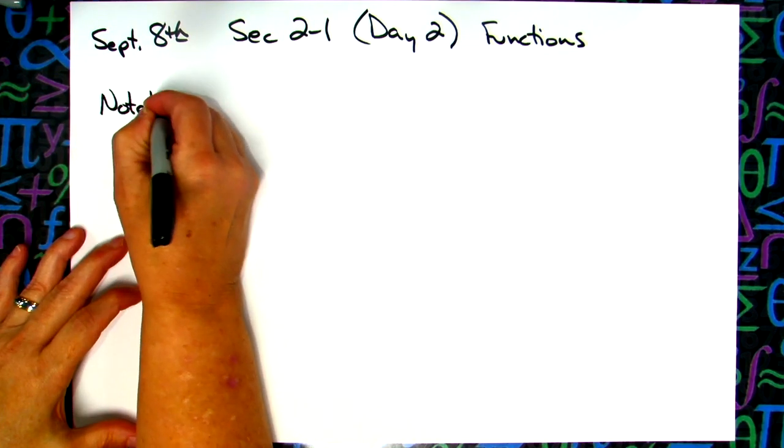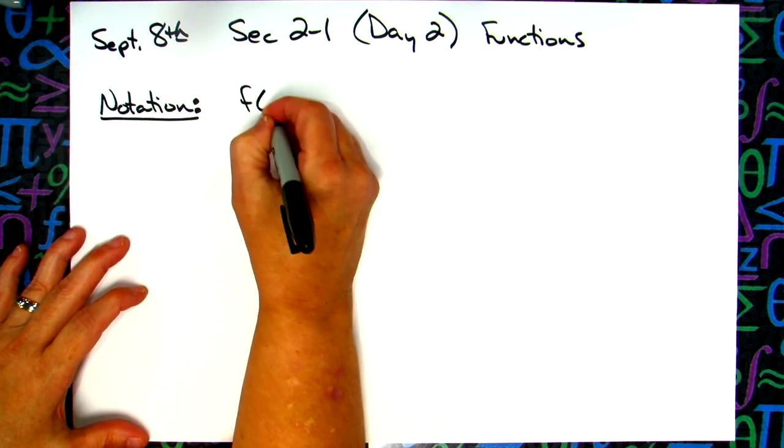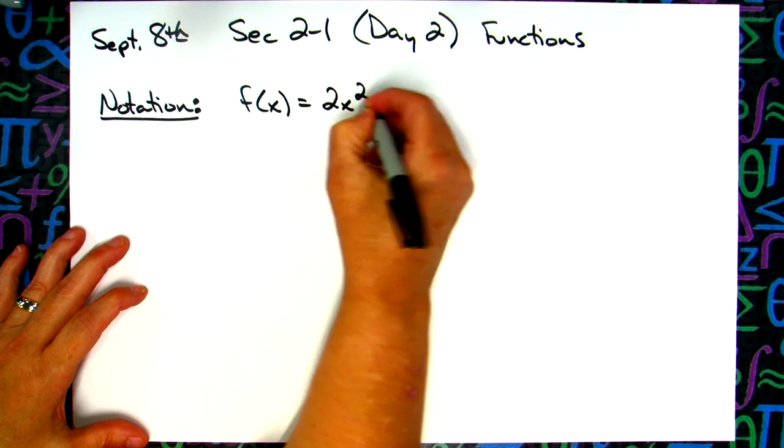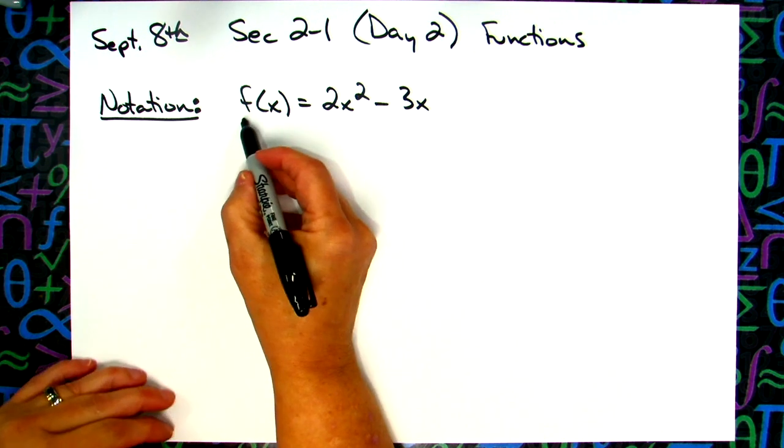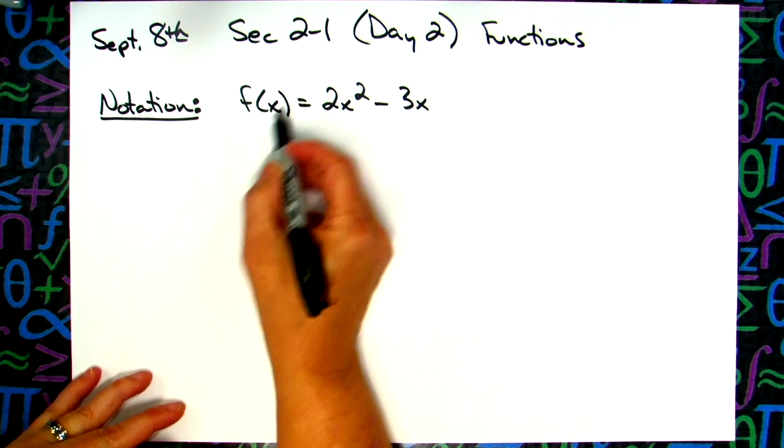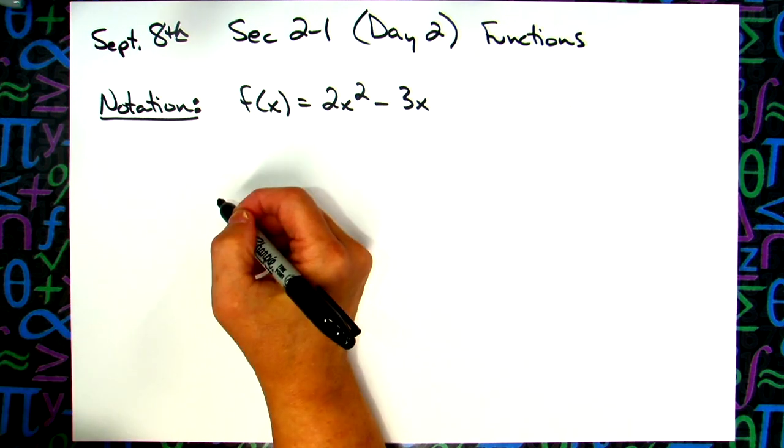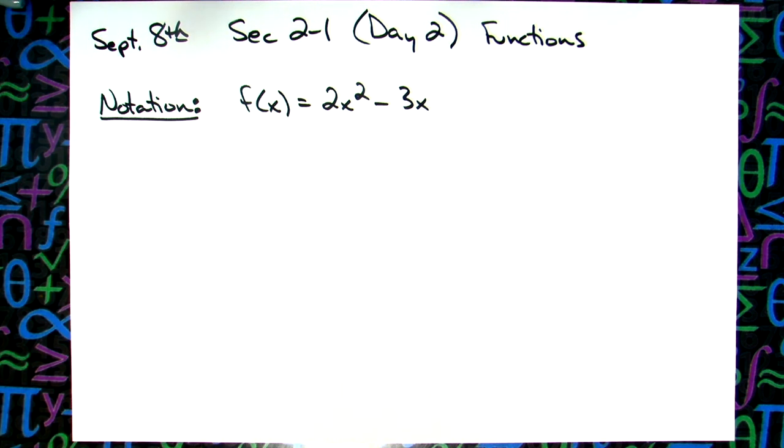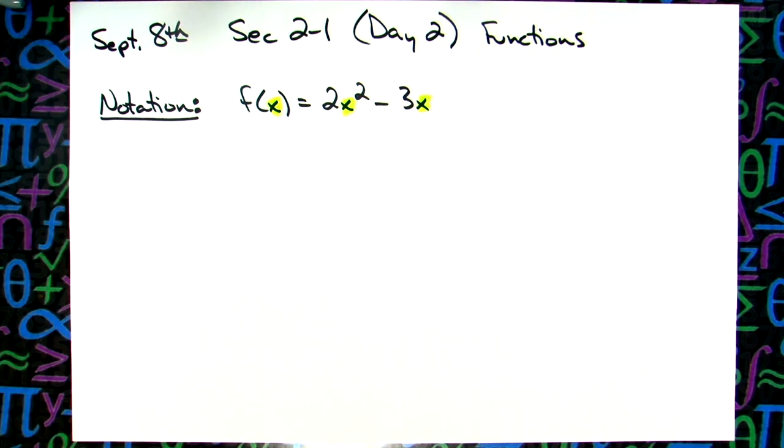Your notation is going to look like f of x equals, maybe say 2x squared minus 3x. It could be any type of polynomial curve I want there. f is the name of the function. So I could change that f of x to g of x, or h of x. The x has to correspond to whatever letter that polynomial curve is written in, whatever variable.